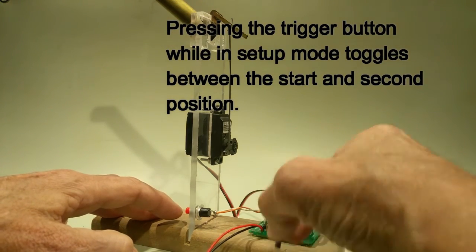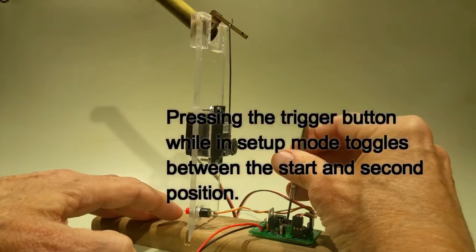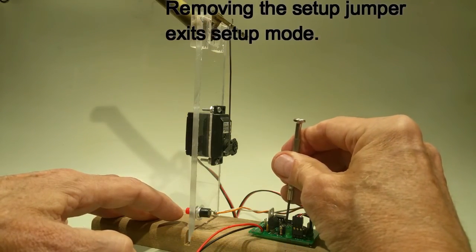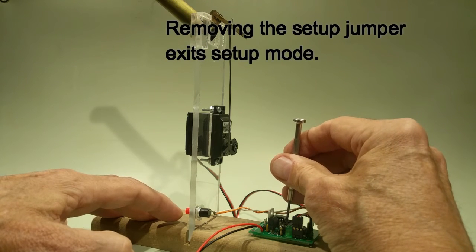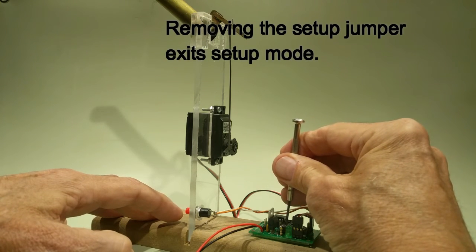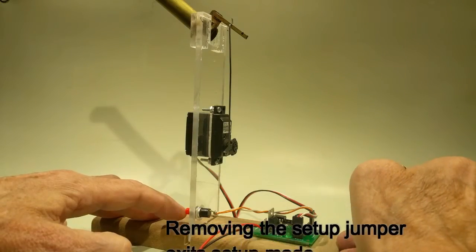Let's remove the jumper. And I'm going to adjust the time back because keep in mind that the potentiometer that adjusts the first position also adjusts the time. And you need to get that down a little bit. Okay. Let's push the button.